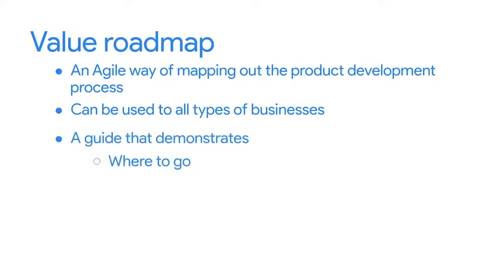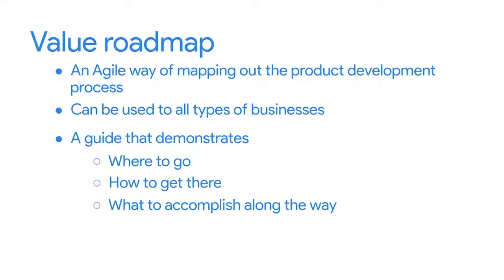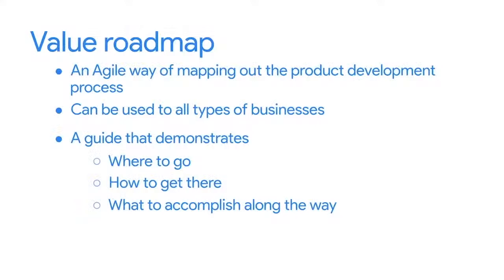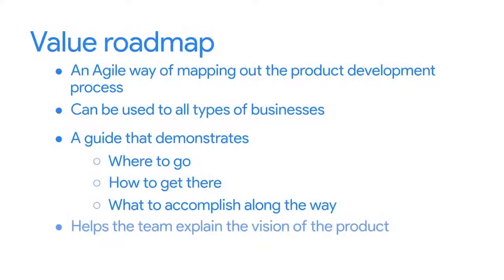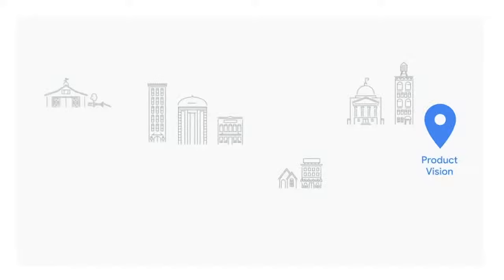As a project manager, part of your job is to help teams stay focused on delivering value. A great way to do this is to build a value roadmap — an Agile way of mapping out the timelines and requirements for the product development process that can be used in all types of businesses. This roadmap is a guide that demonstrates where to go, how to get there, and what to accomplish along the way in order to maximize value. It helps map out a product idea and the strategy for how to deliver it. As the team follows their roadmap, they gather input from customers and stakeholders and apply their findings to each iteration of the product. A typical value roadmap has three components: a product vision, a product roadmap, and release plans.